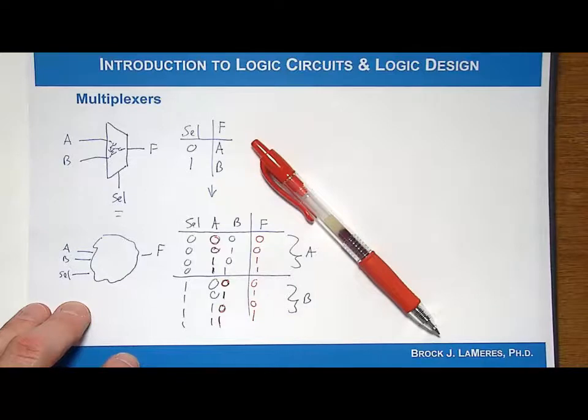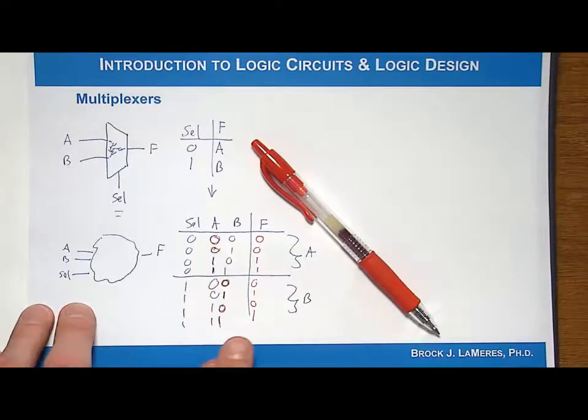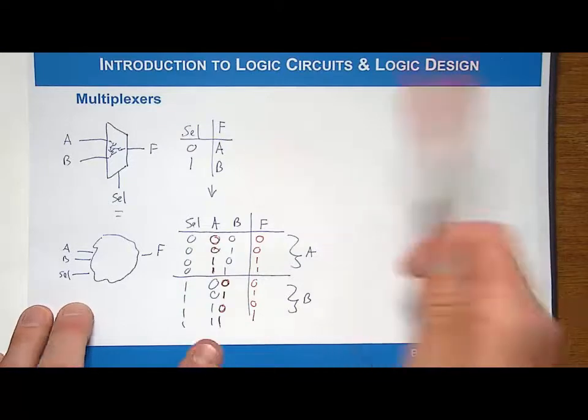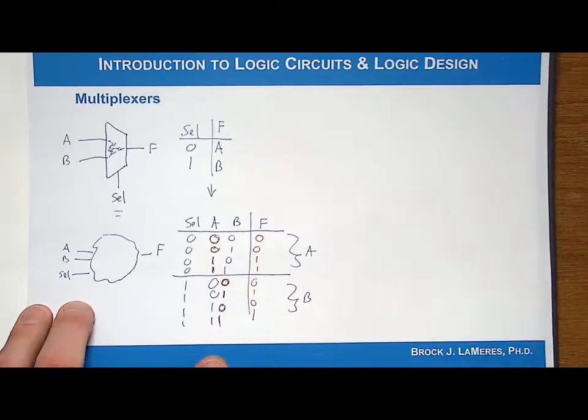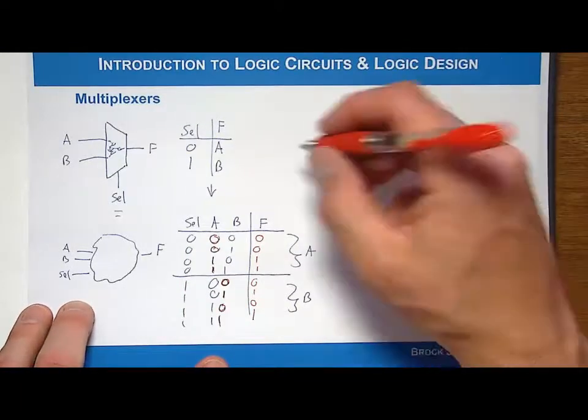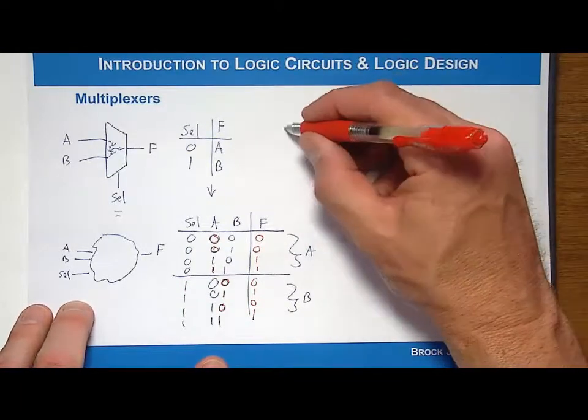The truth table has inputs listed as binary codes and one output, so we can put it into a KMAP. Let's do a three-input KMAP with eight cells.